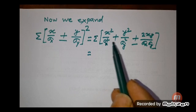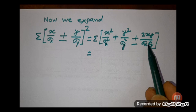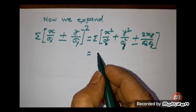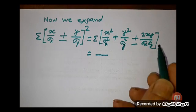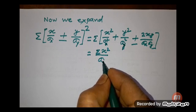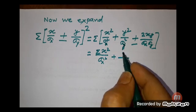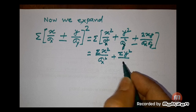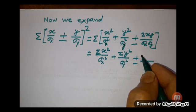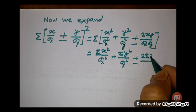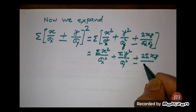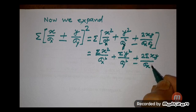Since variance of x (σx²) and variance of y (σy²) are constants, after removing the bracket we get: summation x² divided by variance of x, plus summation y² divided by variance of y, plus or minus twice summation of xy divided by σx times σy.